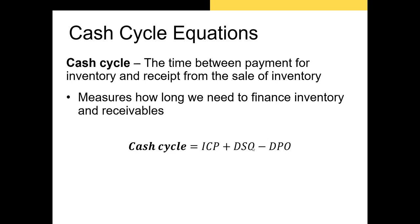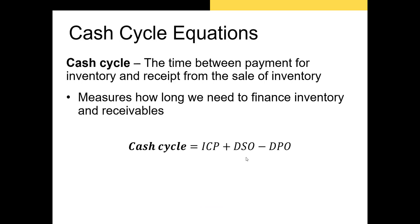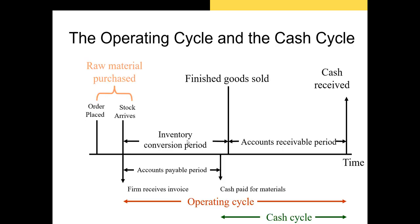The cash cycle represents a combination of three components. The first is the inventory conversion period — the time until inventory is sold. We add to that the days sales outstanding (DSO), which is our AR period, indicating the amount of time until you get paid for the inventory you sold. And we subtract the days payables outstanding (DPO), our accounts payable period, which indicates the amount of time it takes for you to pay for the inputs you purchased. So we're adding the inventory period and AR period and subtracting the payables period. These are also referred to by acronyms ICP, DSO, and DPO.